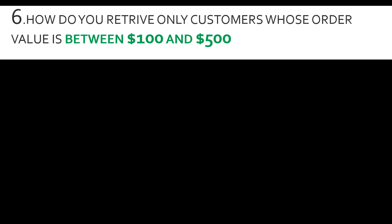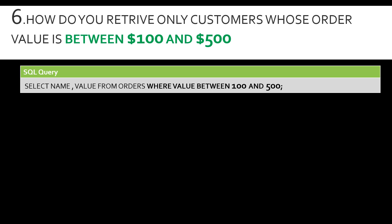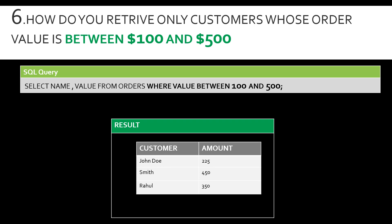Question number seven: how do you retrieve customers whose order value is between 100 and 500? This is a range question. The SQL query uses SELECT name, value FROM orders WHERE value BETWEEN 100 AND 500. This retrieves all order values ranging from 100 to 500. The result shows three records with values greater than 100 but less than 500. This is useful when translating business requirements into functional specs.